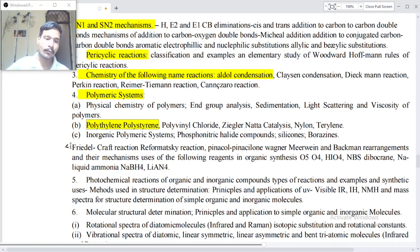Phosphonitrilic halide compounds and silicones, Borodine-Hunsdiecker reaction, Reformatsky reaction, Pinacol-Pinacolone rearrangement, Wagner-Meerwein and Beckmann rearrangement and their mechanisms, uses of the following reagents in organic synthesis: OsO4, HIO4, NBS, diborane and liquid ammonia, NaBH4, LiAlH4, and photochemical reactions of organic and inorganic compounds, types of reactions and examples and synthetic uses.